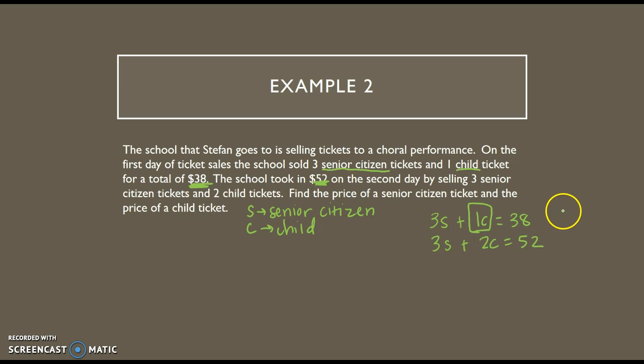So I'm going to subtract the 3s over. So I get c equals negative 3s plus 38. And I'm going to take that c equation and plug it into the c of the second equation.